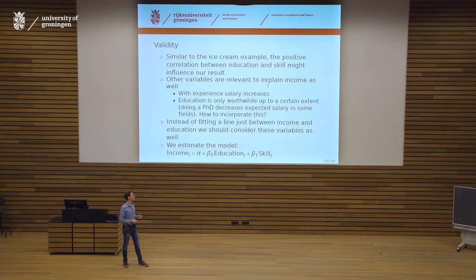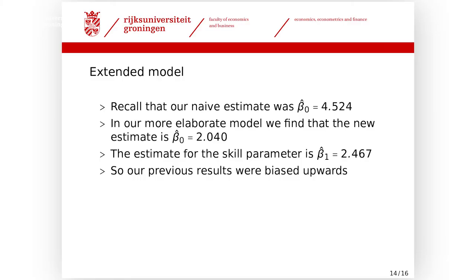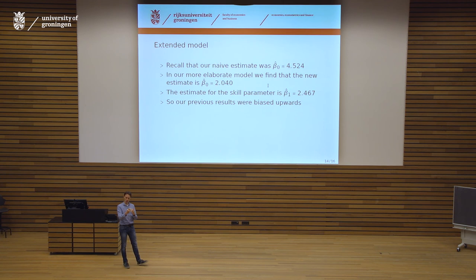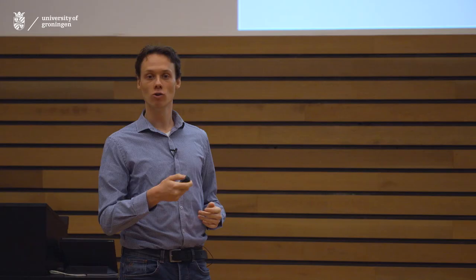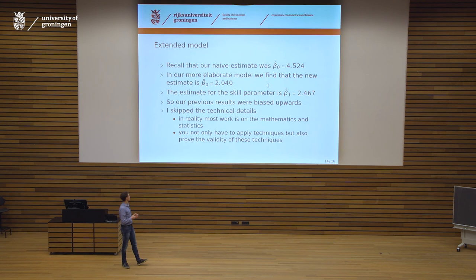To get a complete analysis we should take these factors into account. For now I only focus on adding skill. Our naive estimate was 4.5, but when we include skill in our model, the estimate for education drops to 2.0. We first thought an additional year of education led to four and a half thousand euros extra annual income — now it's only two thousand. Skill plays a very important role: it drives income and is correlated with education, biasing our results upward.